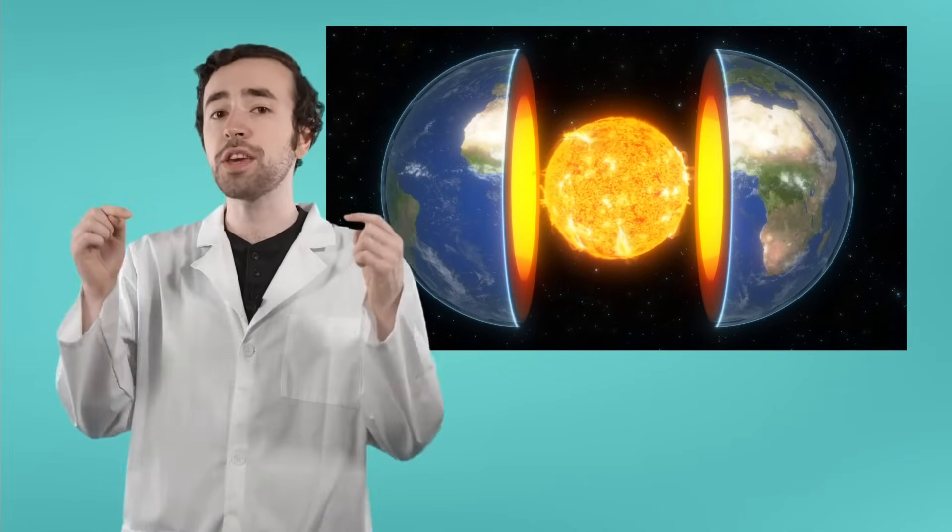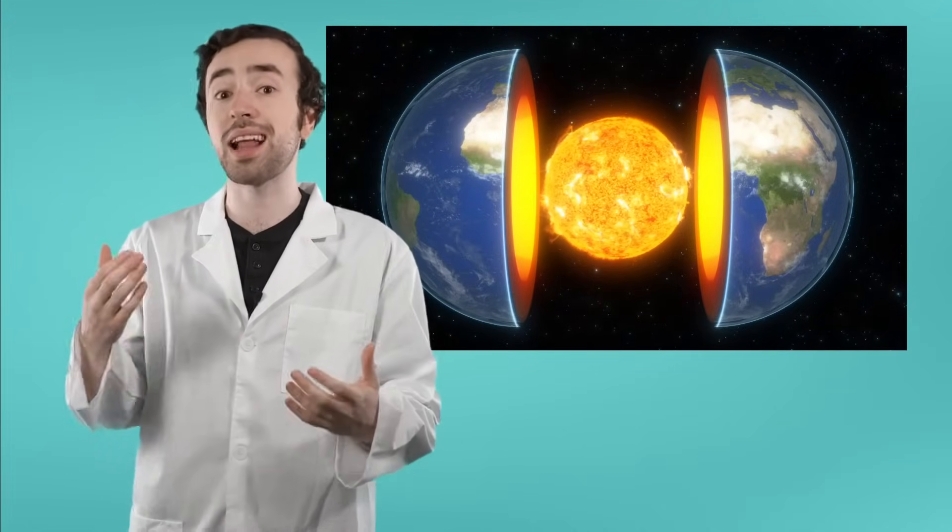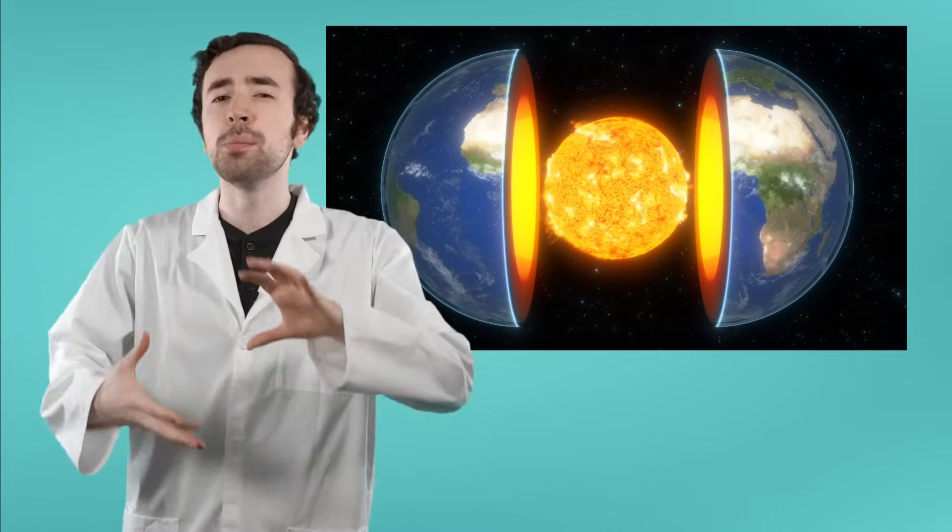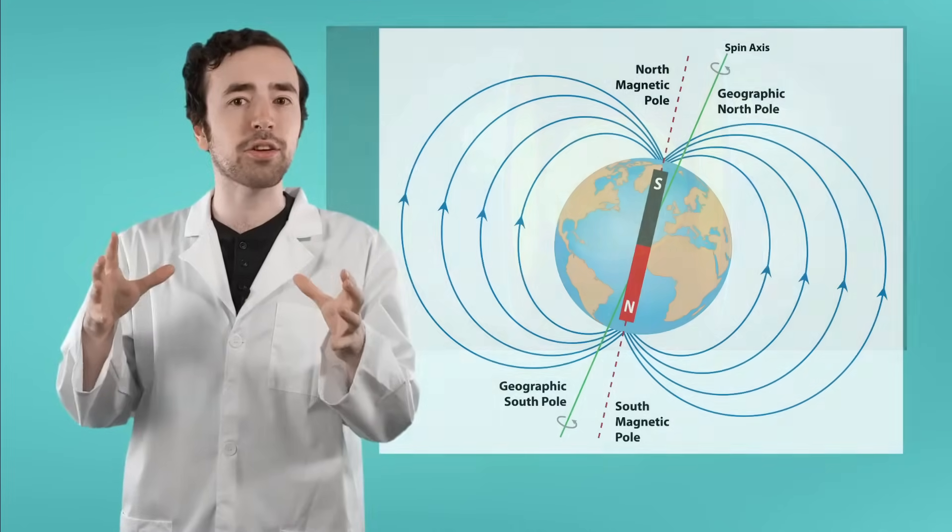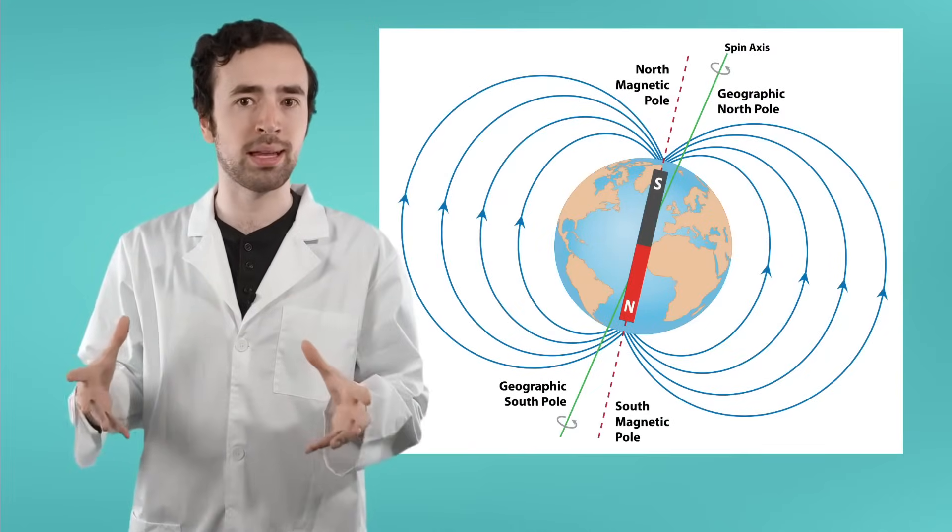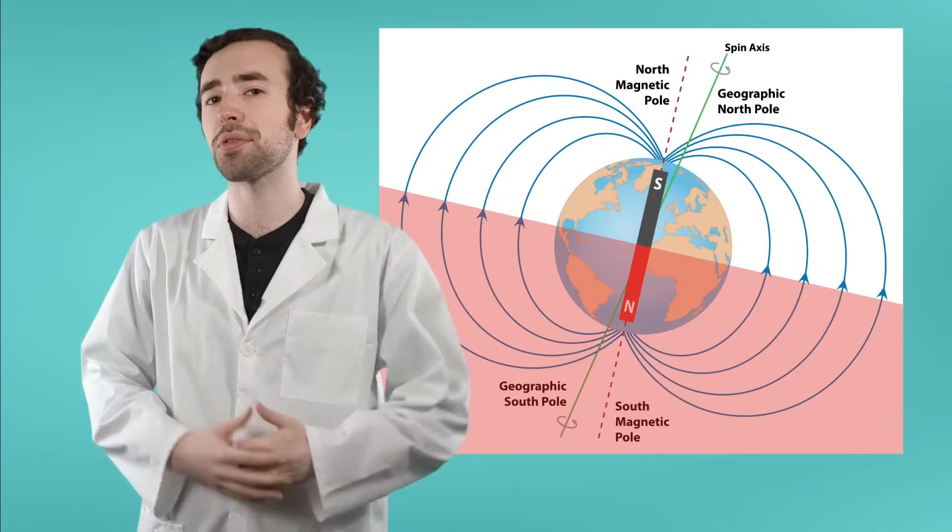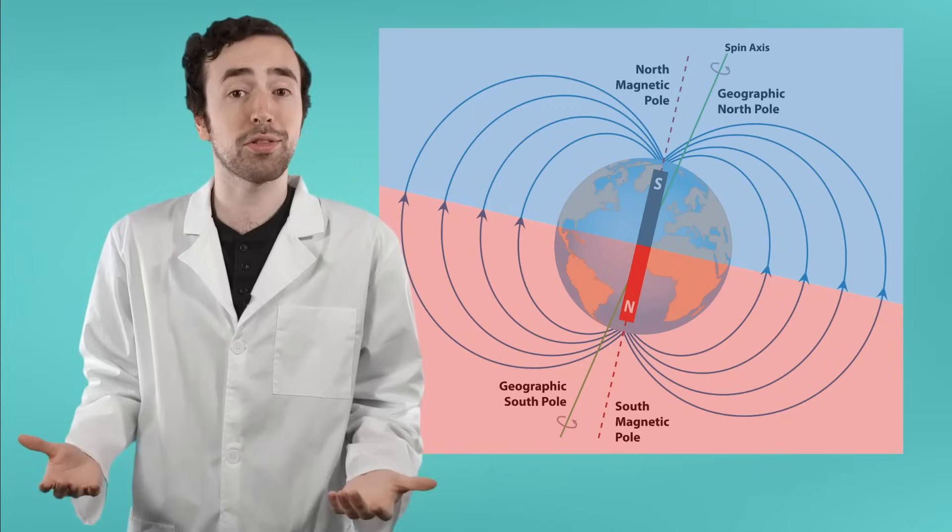One of the biggest natural magnets out there is actually the Earth itself. The core of the Earth is made up of molten iron and nickel, so the movement of those liquid metals creates a magnetic field over the entire planet, complete with its own north and south pole, just like any other magnet.